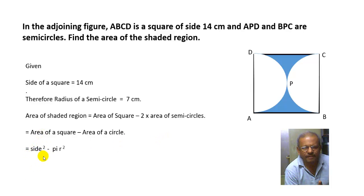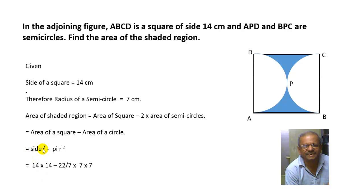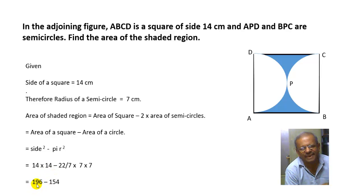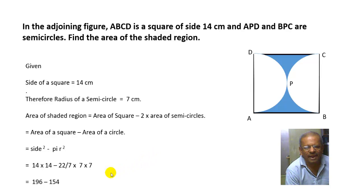So the area equals side squared minus pi r squared. Putting in the values: side is 14 centimeters, so side squared is 14 times 14. Pi is 22/7 and r is 7, so r squared is 7 times 7. This gives 196 minus 22/7 times 7 times 7. The 7s cancel, giving 22 times 7 equals 154. Therefore, the shaded area equals 196 minus 154, which is 42 square centimeters.